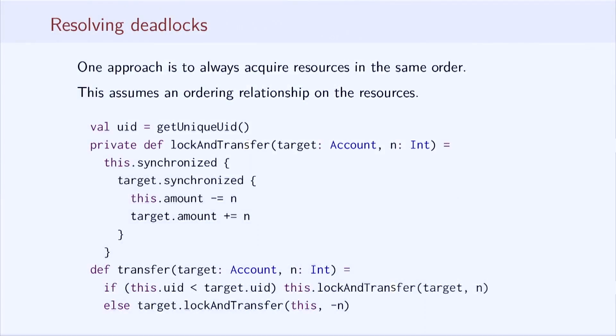A simple way to achieve ordering is to assign unique IDs to different accounts. We are in luck. The getUniqueID method that we defined earlier is just what we need for the job. We use it to compute a unique ID for every account object.